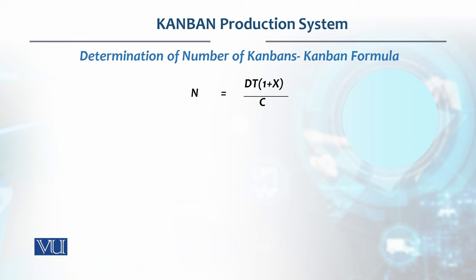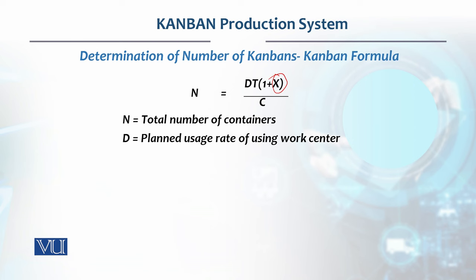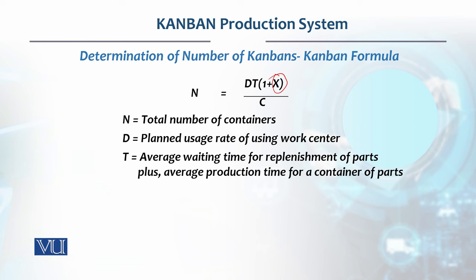The number of Kanbans required — that is, the quantity — is important. It is given by the formula: n = d × t × (1 + x) / c. Here, n is the total number of containers, d is the planned usage or demand of the work center, and t is the average waiting time, which we basically call lead time.